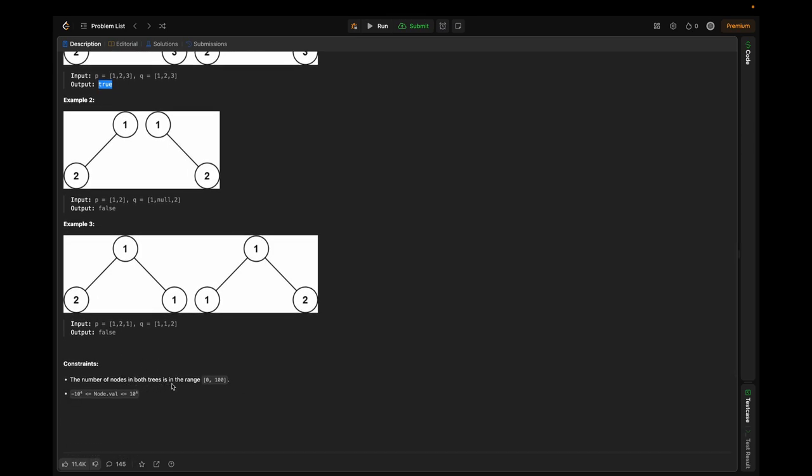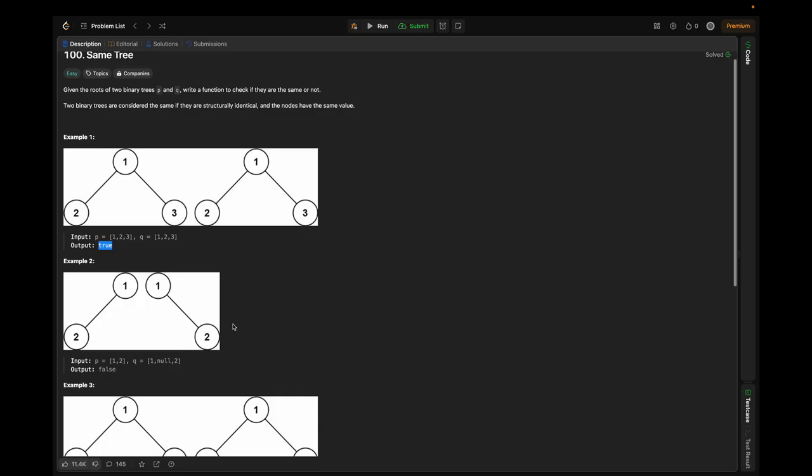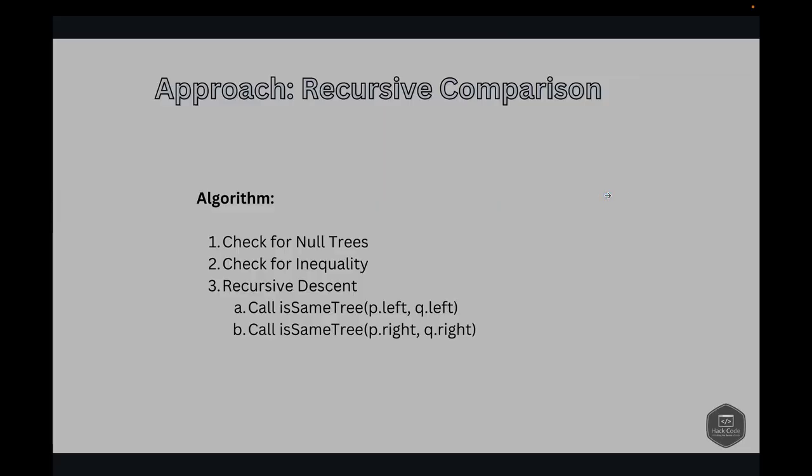The constraints: the number of nodes in both trees is in the range of zero to hundred, and the node value is in the range of negative 10^4 to 10^4. Basically, the crux of the problem asks us to determine if two trees are the same. This means that every corresponding node must have the same value and the structure of the trees must be identical.